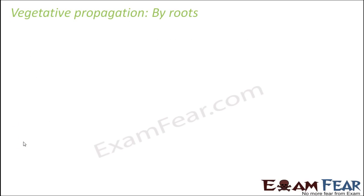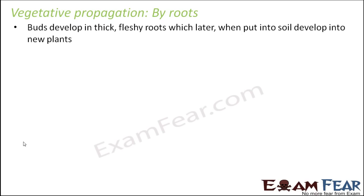Let us start with natural vegetative propagation by roots. First, let us understand how roots help in vegetative propagation of plants. Buds develop in thick fleshy roots which, when put into soil, develop into new plants. The roots are thick and fleshy as well as tuberous due to the storage of food materials.